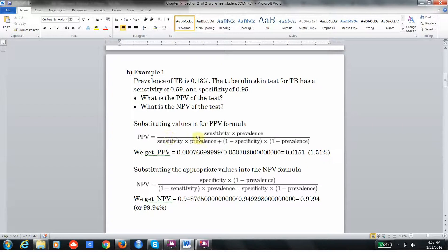This is attributable to the fact that the prevalence, which goes here, is so small. When we convert this to a decimal, this is 0.0013. Whenever you have a very low prevalence, the PPV is always very low.